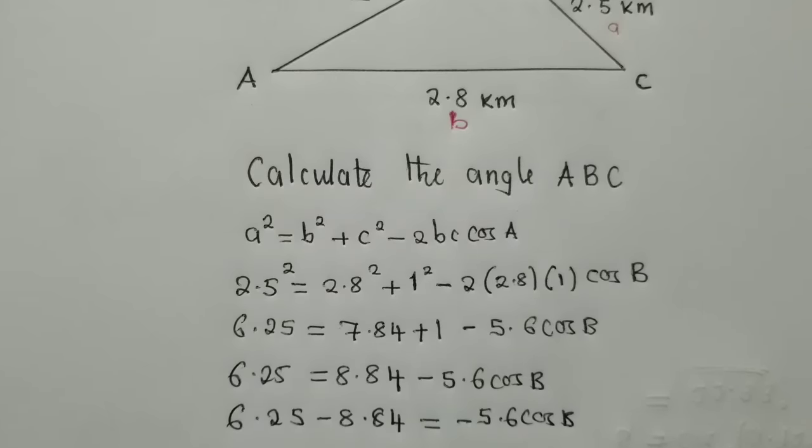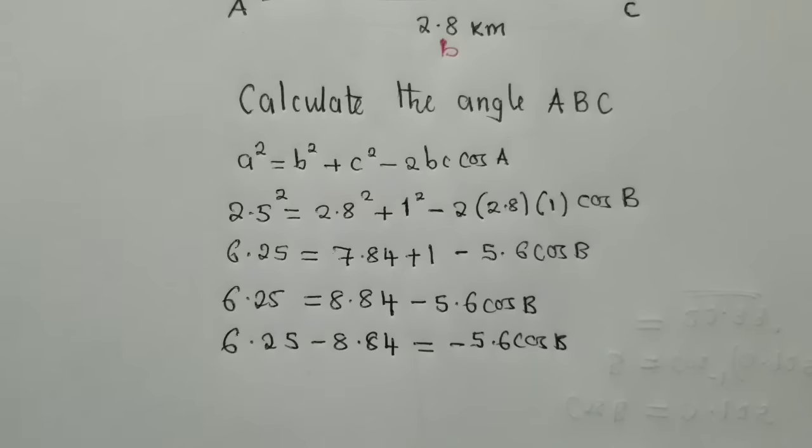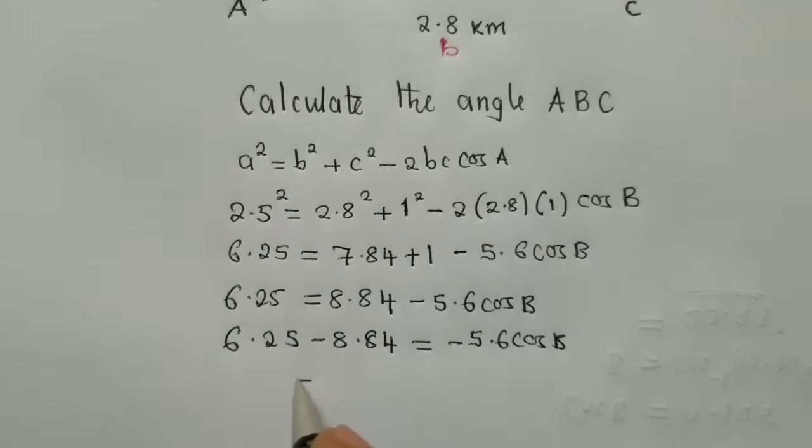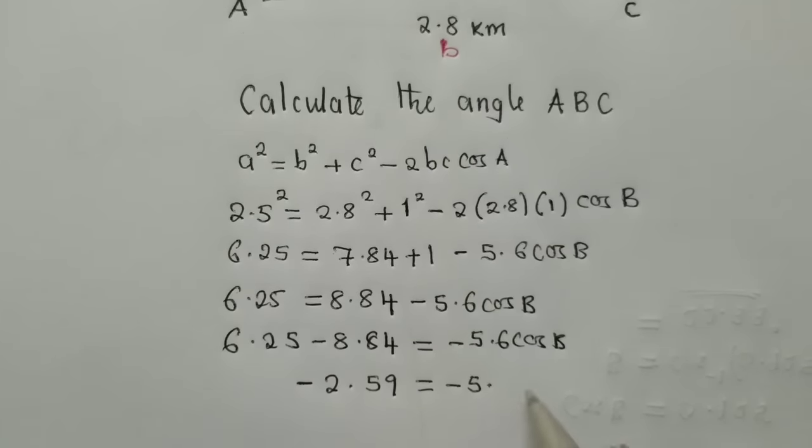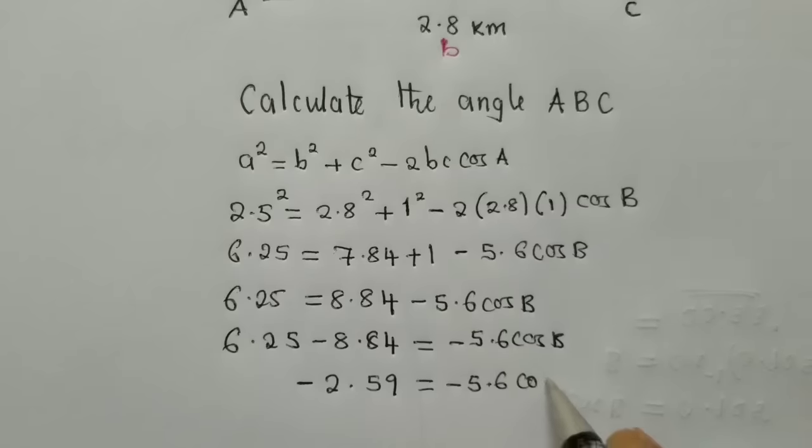So here next, we subtract 6.25 minus 8.84. We are getting a negative 2.59 equal to negative 5.6 cos B.